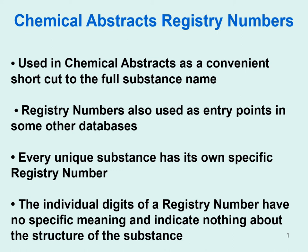Chemical Abstracts has developed this wonderful and very convenient system for recording every known substance. Instead of a name, which are sometimes very cumbersome — especially most compounds don't even have a short common name — we can use very convenient registry numbers. As stated in the first bullet point, it's a very easy shortcut to the name of a full substance.